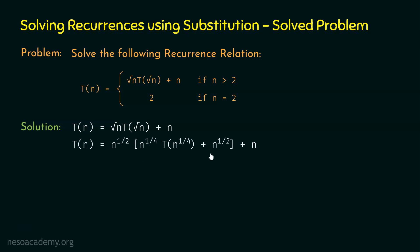This is the new T(n) obtained. We have written n^(1/2) as is, and T(√n) is replaced by n^(1/4) · T(n^(1/4)) + n^(1/2). Now we multiply n^(1/2) by n^(1/4) · T(n^(1/4)), and also multiply n^(1/2) by n^(1/2). Opening the brackets, we get n^(1/2) · n^(1/4) · T(n^(1/4)).